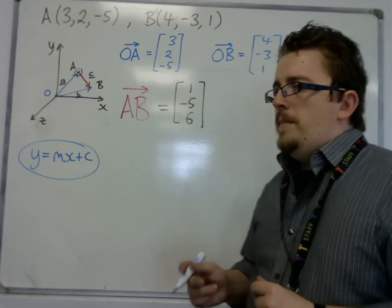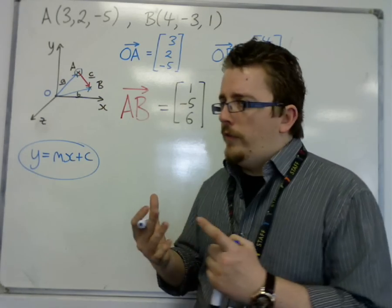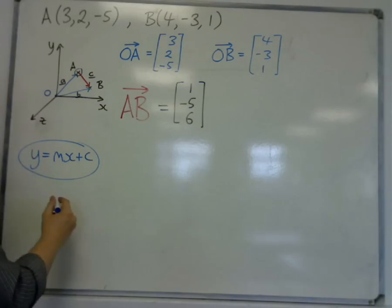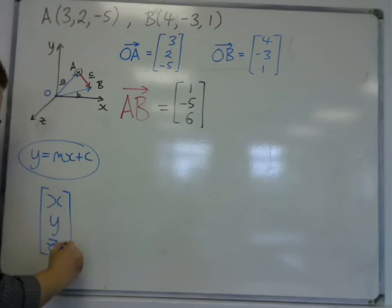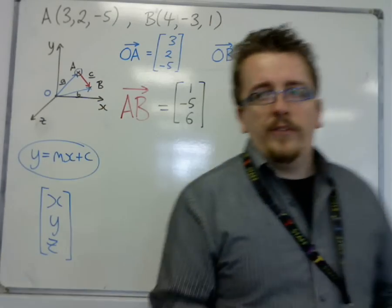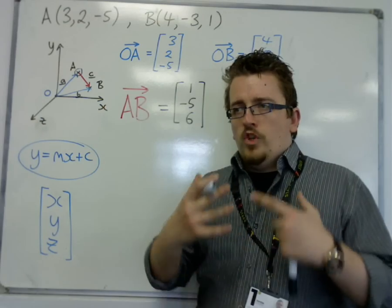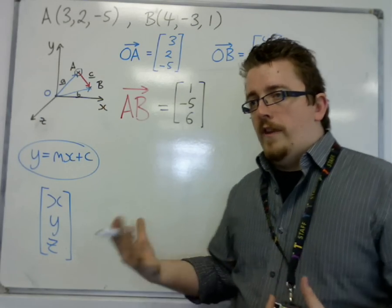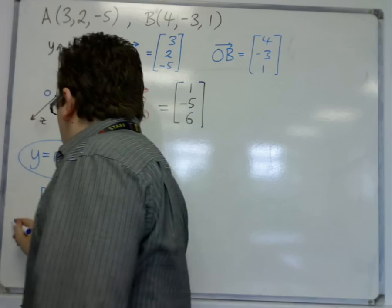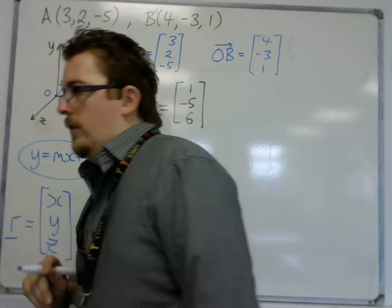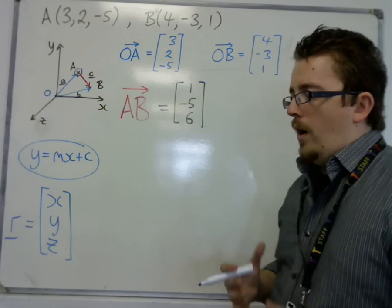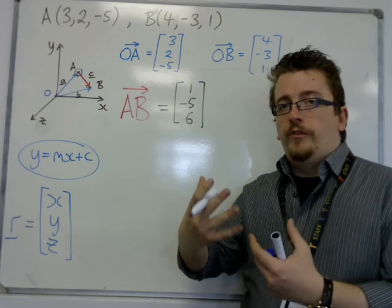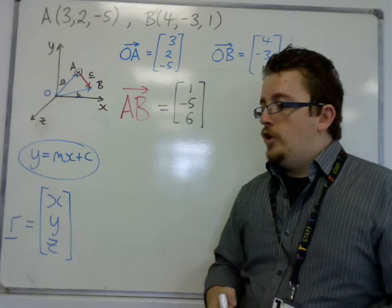We're not going to be using y here, because in three dimensions we already use x, y, z as being coordinates within a vector. Generally what we do is we refer to x, y, z as being r — we give this the value r, with an underline. So r is the vector (x, y, z), which includes how x, y, z are changing. So the equation begins with r.